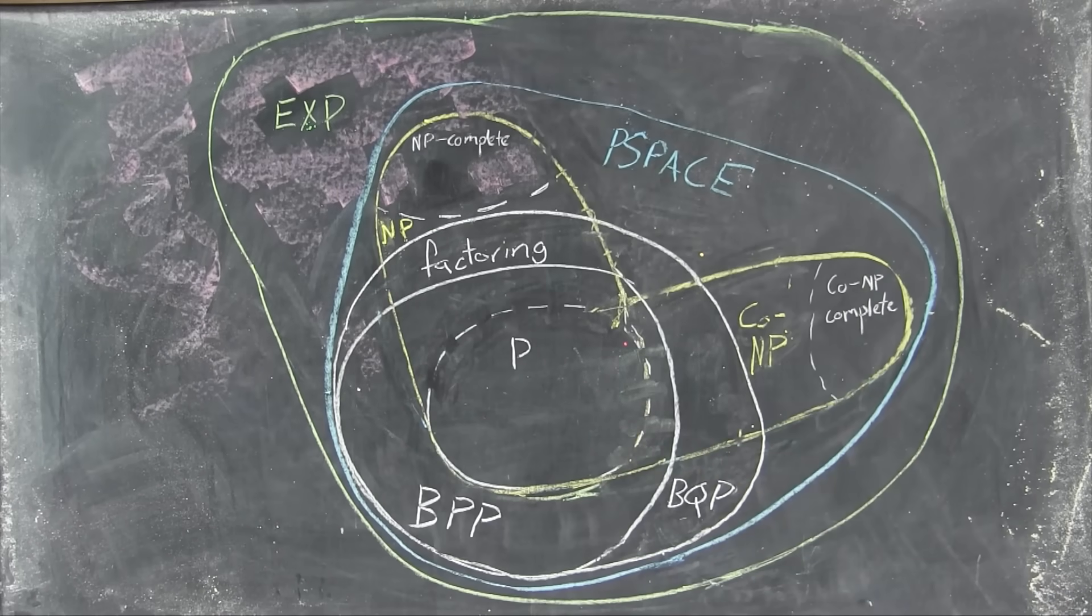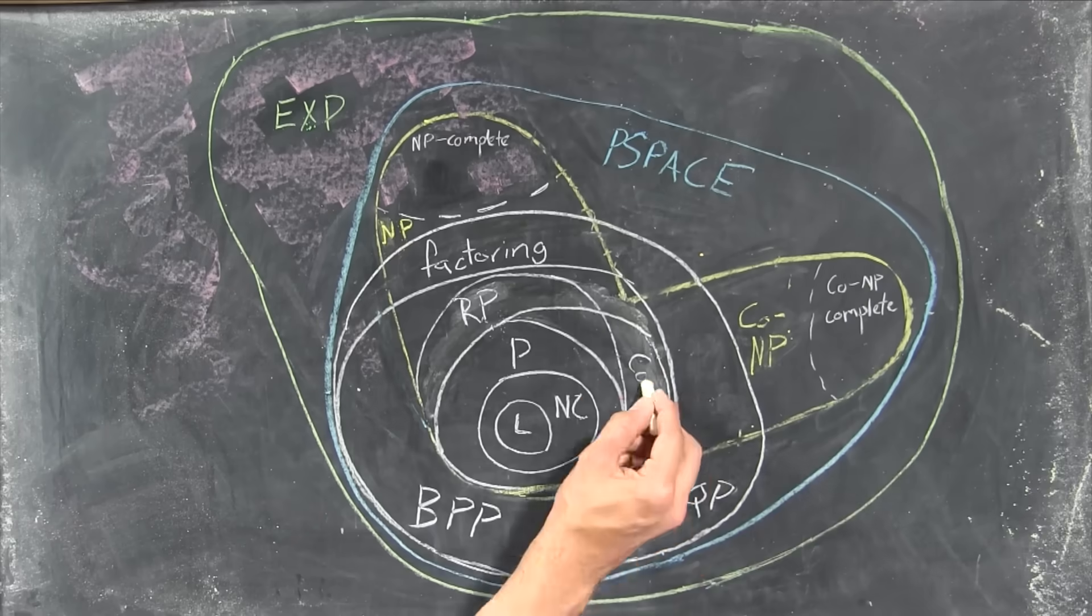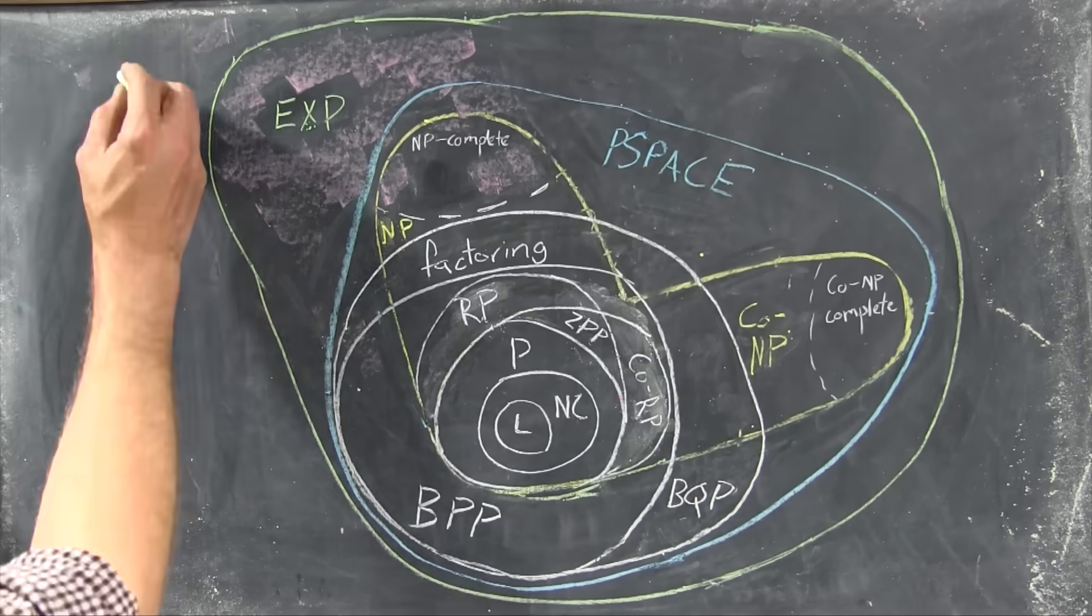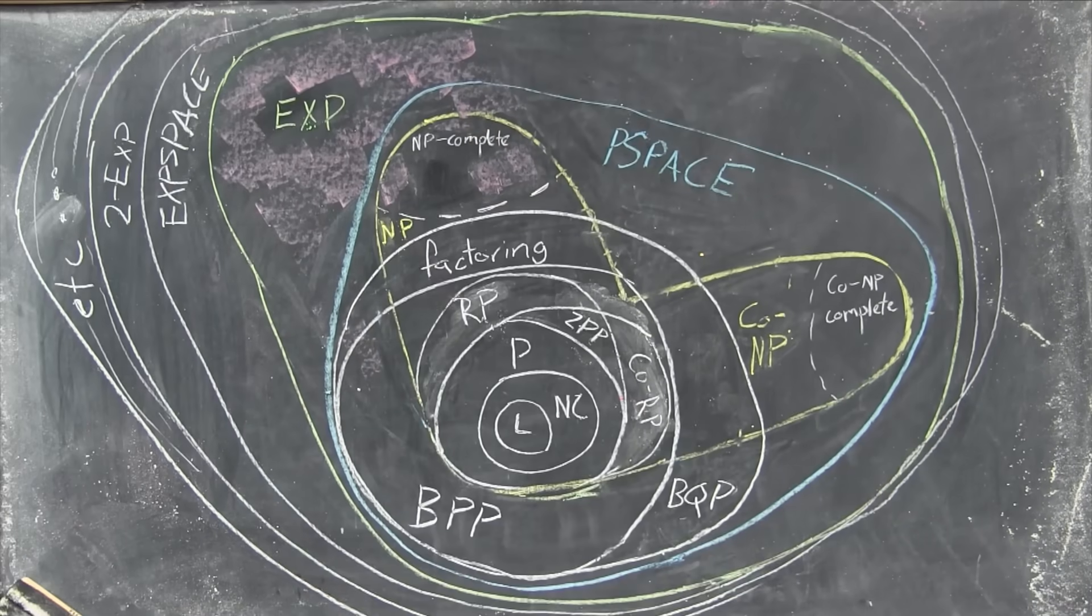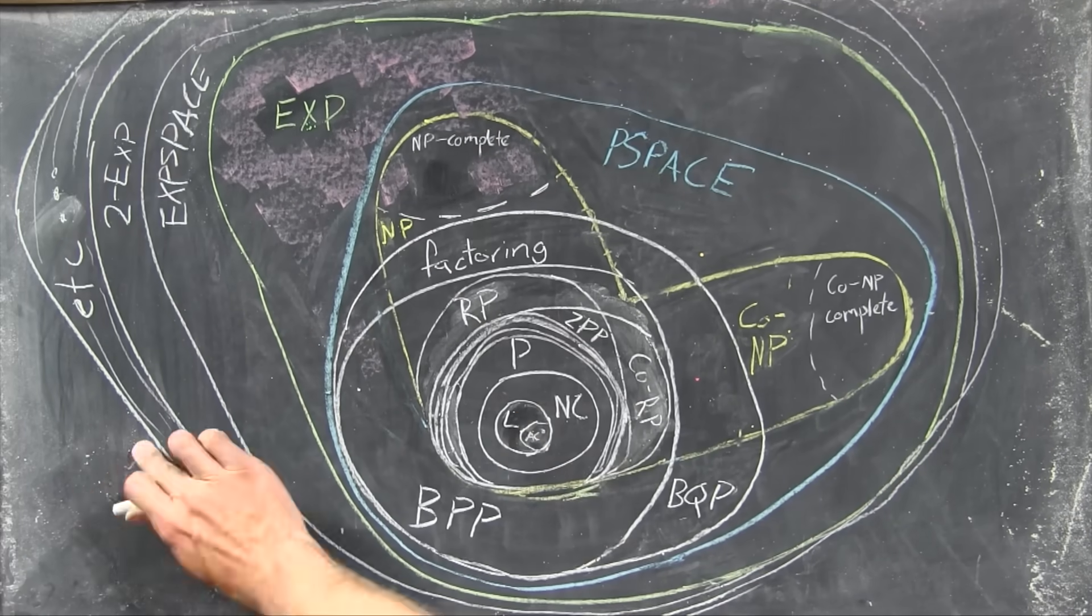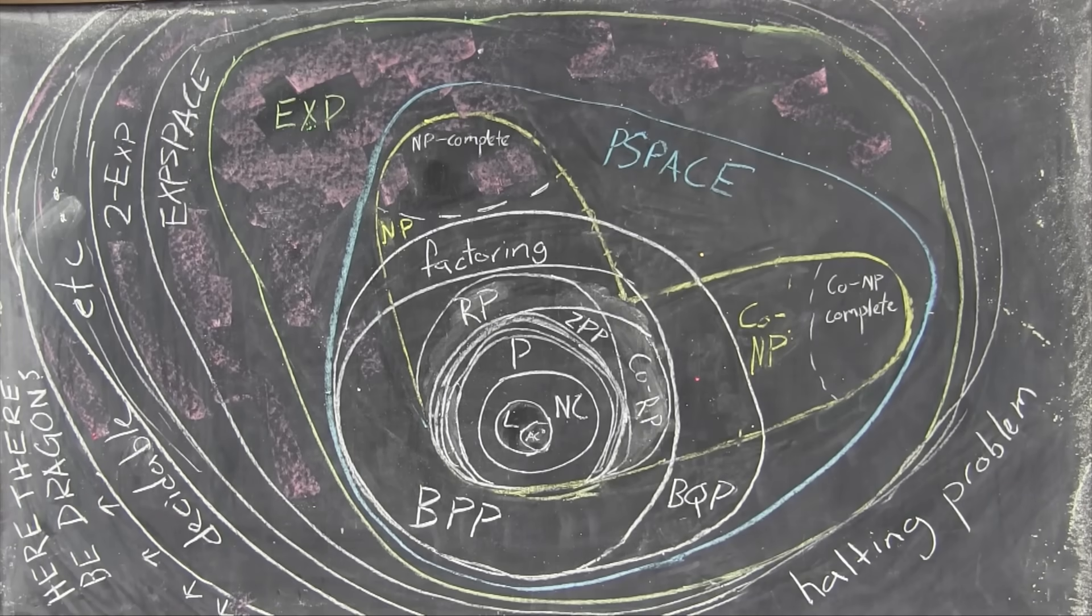All over the place in here are complicated little classes that would take a lot of explaining, and actually some of these turn out to be infinite hierarchies of problems that are slightly more difficult than the ones beneath them. We know there's an exponential hierarchy, and there's probably a polynomial hierarchy, and out beyond all of this are problems that are just not solvable by any computer in any amount of time or space.